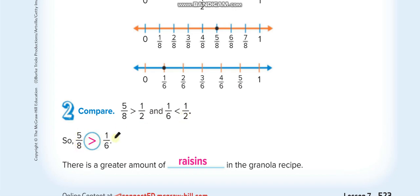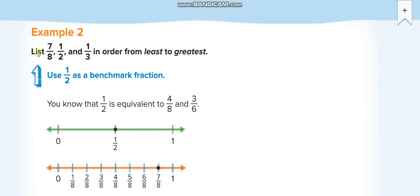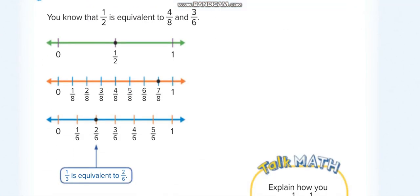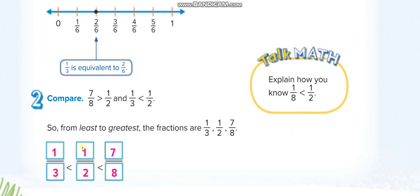Now we are comparing three fractions. The first fraction: half of 8 is 4 and we have 7, so it is more than half. The second fraction is already equal to half. The third fraction: half of 3 is 1.5, but the numerator is just 1, so it is less than half. So ordering from least to greatest: 1 over 3 is the smallest, then the fraction equal to half, then the fraction more than half.